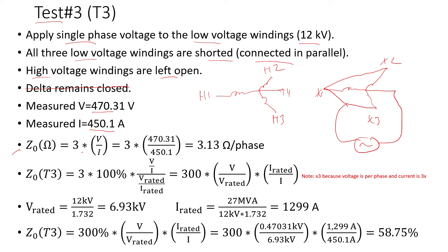Here is the equation to calculate the zero sequence impedance in ohms obtained from this test: three times the voltage divided by the current. That gives 3.13 ohms per phase. I multiply by three because the measured voltage is line-to-neutral — it's a per-phase voltage.